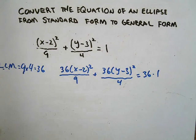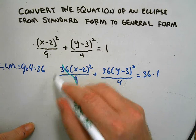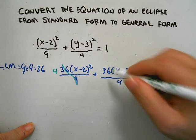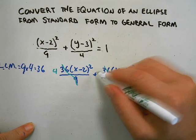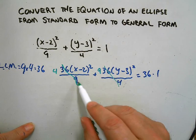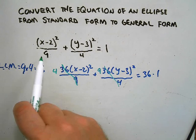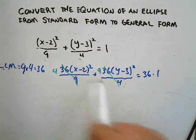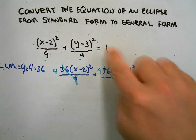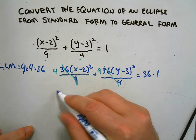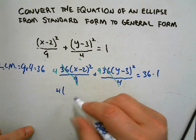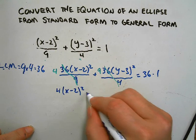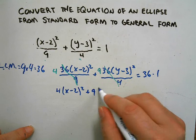Well, of course, the nine goes into thirty-six four times and four goes into thirty-six nine times. You'll see that these two always swap places. Whenever the LCM is the product of the two, they just switch, and you're left with thirty-six. So we have 4(x-2)² + 9(y-3)² = 36.